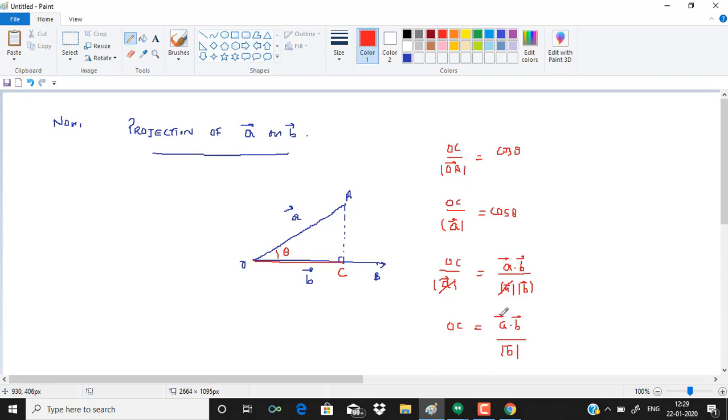Now what is OC? OC is the projection of A on B vector. Similarly, if I ask what is the projection of B vector on A vector, that will be simply B dot A upon magnitude of A.